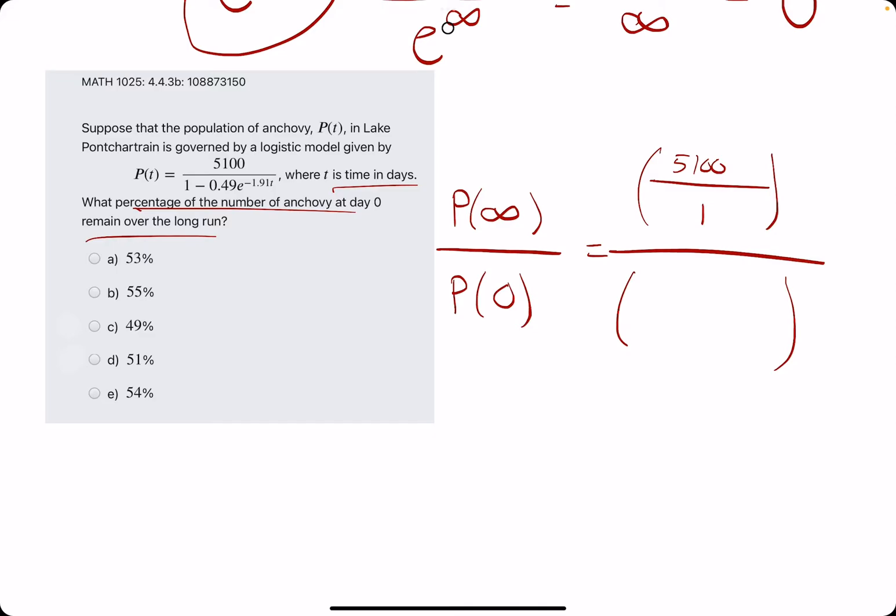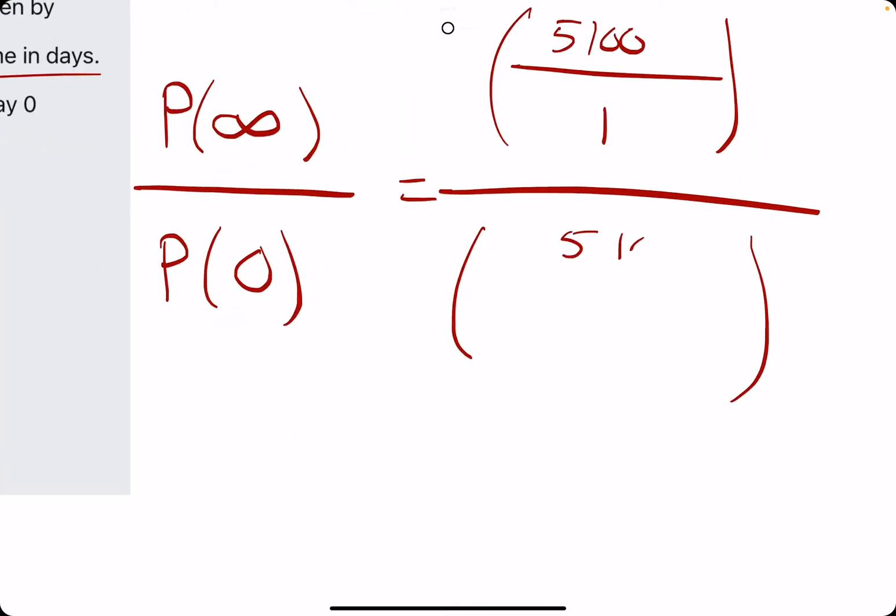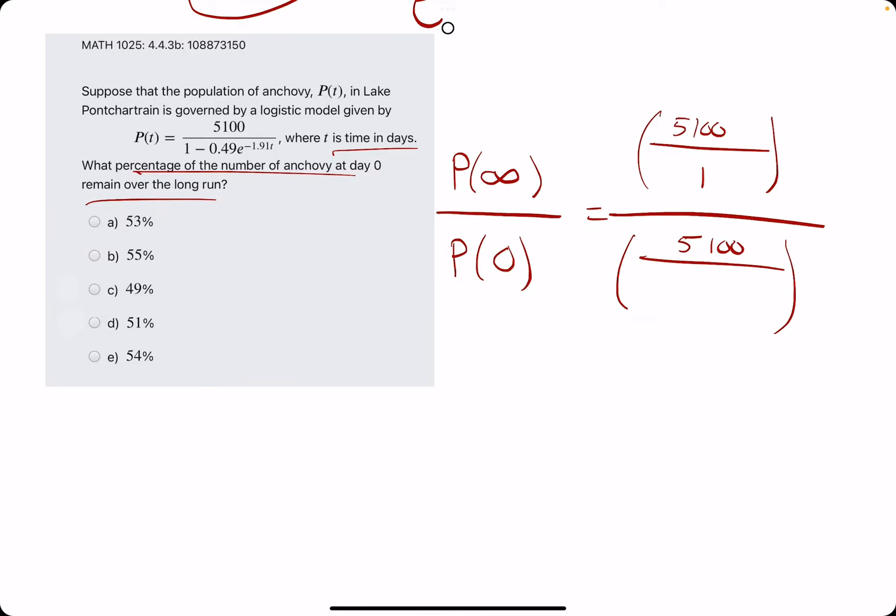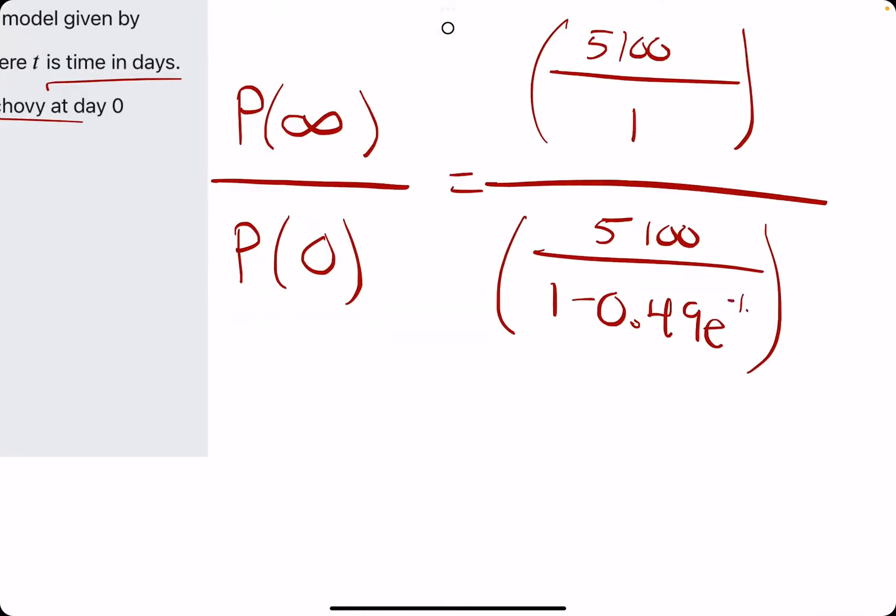If we plug in 0, let's talk about what happens. So, we have 5,100. We have 1 minus 0.49 e to the negative 1.91 times 0. But then, the exponent, that is times 0, just becomes 0. E to the 0 is 1. Anything to the 0 power is 1.